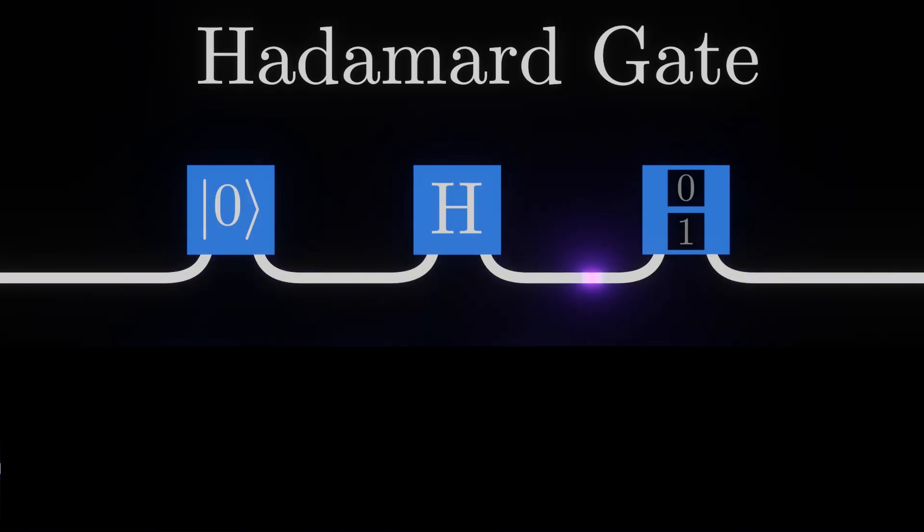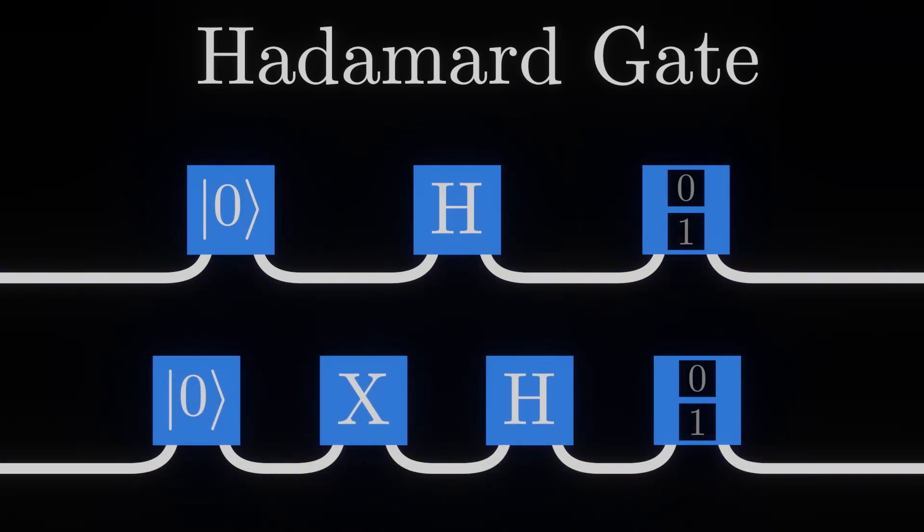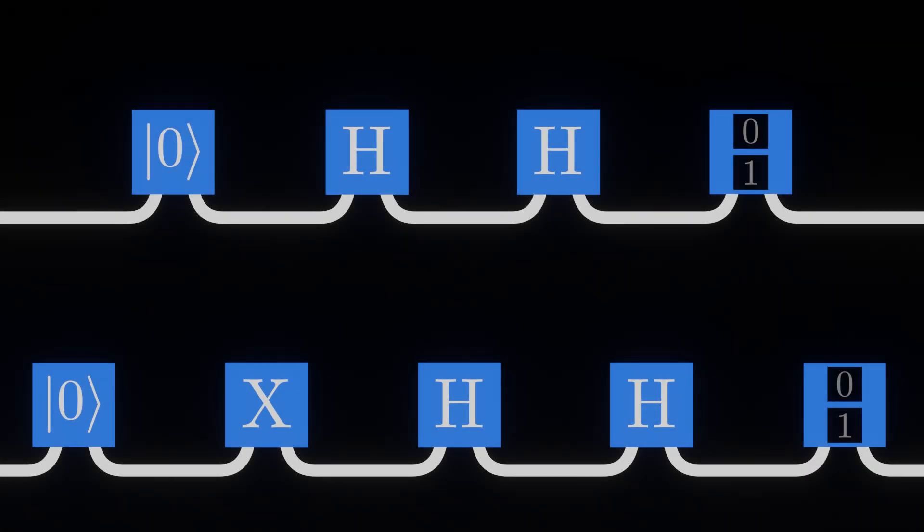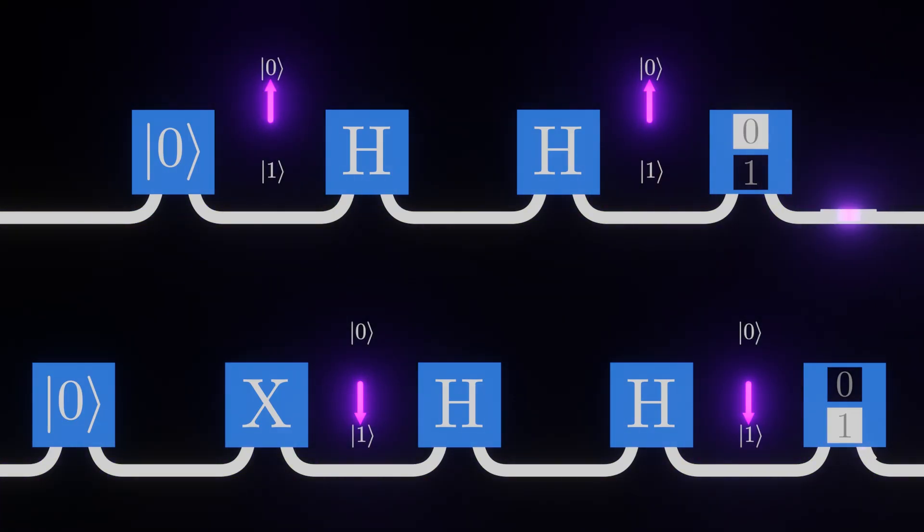The same thing happens if we use a qubit starting in the 1 state. From this, it might seem like the H gate is just randomizing the qubit. If this was the case, we'd expect that two H gates in a row would have the same effect, the second gate just randomizing the qubit a second time. But when we perform this experiment, we find that the qubit is always measured as whatever it started as.